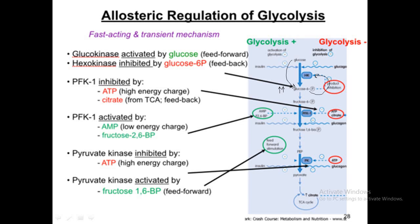This type of reaction, where the product is inhibiting the enzyme, is known as product inhibition or feedback inhibition. In this case, the reaction is preventing hexokinase from proceeding toward glucose-6-phosphate formation — so feedback inhibition is taking place; the product itself is inhibiting the enzyme.